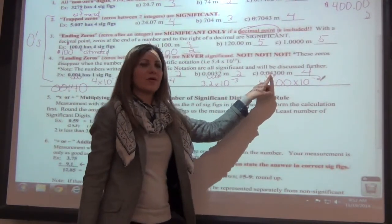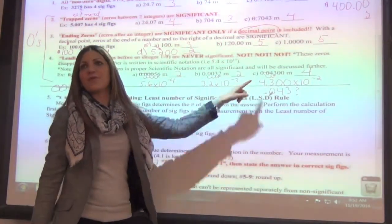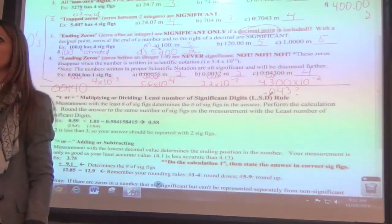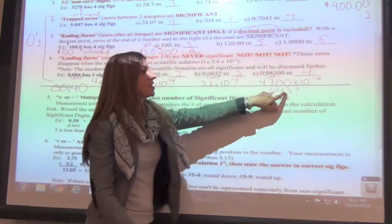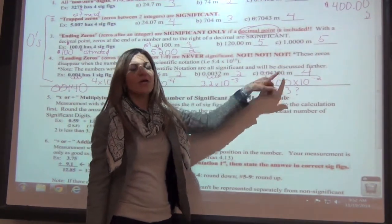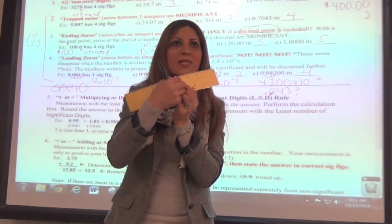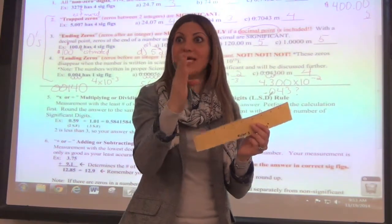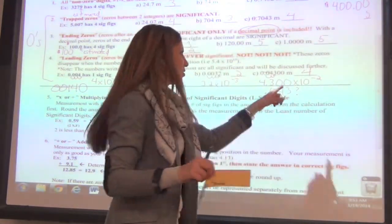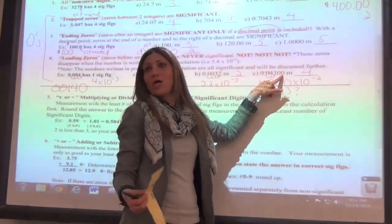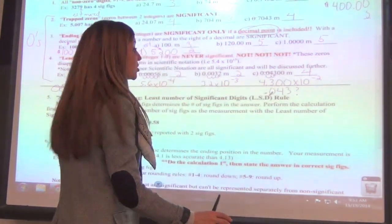You know how sometimes when you measure something and you actually get right on the 0.00 line? What you're doing by adding those zeros is telling the person that's how far your instrument goes. That's it for the rules — let's try some practice problems. Write this down: not-significant zeros. There are only two situations when zeros are not significant.